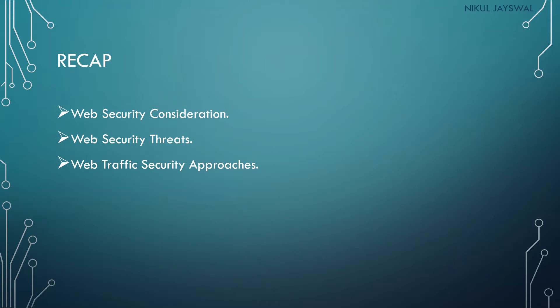In the previous lecture, we discussed web security considerations. Many organizations use websites for product information, various operations like online selling, and they also have web servers containing confidential information. We need to consider web security seriously. We also covered web security threats across several parameters: integrity, confidentiality, availability, and authentication.